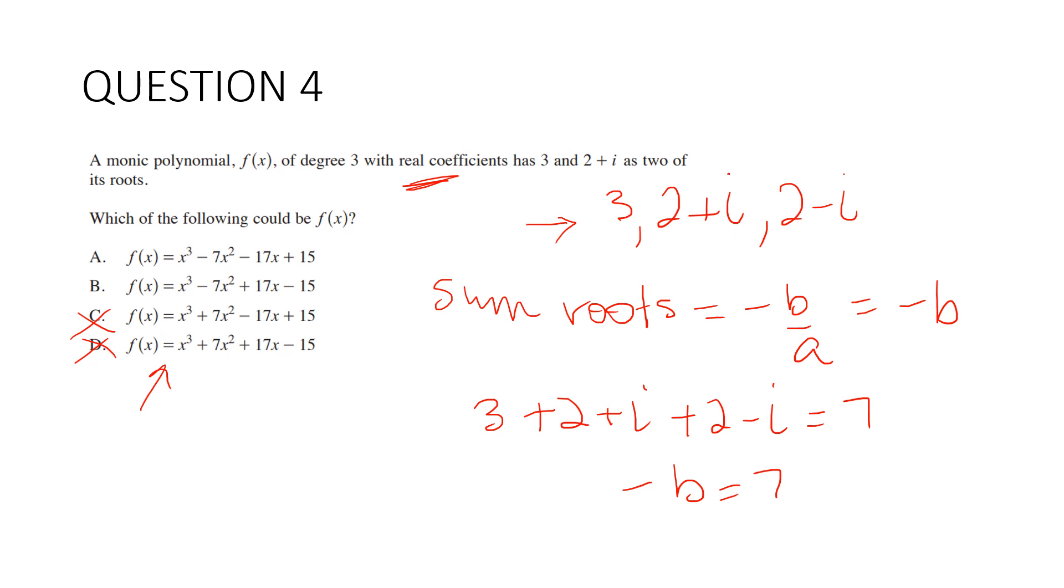Now let's do the product of the roots. The product equals minus d. The product is 3 times (2 plus i)(2 minus i) which is 3 times (4 plus 1), which is 15. So d is negative 15. Our answer must be B.